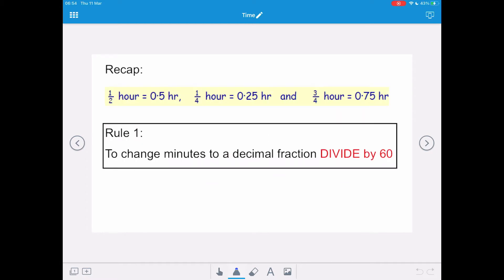So to recap, half an hour equals 0.5 hours, a quarter of an hour equals 0.25 hours, and three quarters of an hour equals 0.75 hours. But the rule is to change minutes to a decimal fraction, we divide by 60, because there are 60 minutes in an hour, not 100.